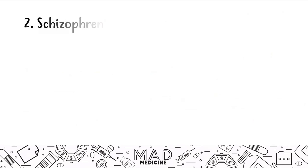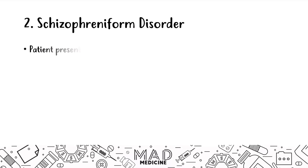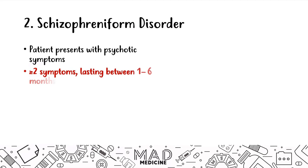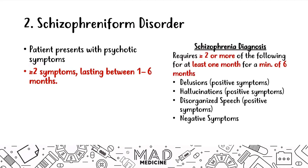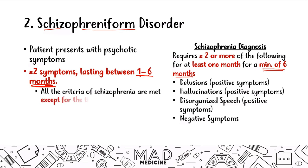The second schizophrenic disorder is called schizophreniform disorder. In this disorder, patients are going to present with psychotic symptoms — two or more symptoms that last between one to six months. Schizophreniform and schizophrenia are very similar, but the only difference is the time frame. If it lasts between one to six months, it's schizophreniform. If it lasts a minimum of six months or more, it's schizophrenia. All the criteria for schizophrenia are met — only the timeline is not met. Think of schizophreniform as a milder form of schizophrenia.